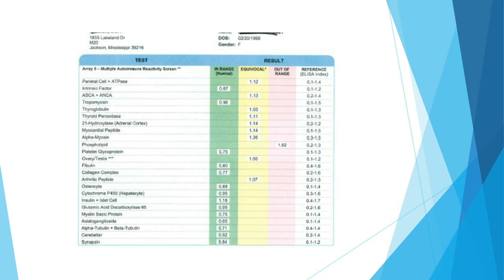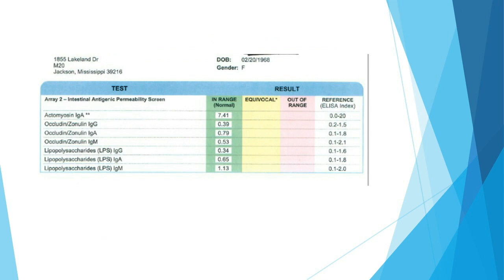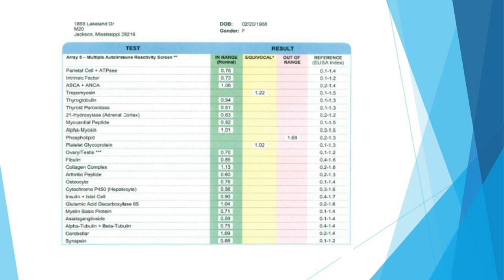Her follow-up testing that we did: we looked at that Cyrex Array 2, and it was completely clean after gut protocol, which is always a victory because we know that we've reduced her risk for developing progressive autoimmunity. And then just for ticks, we repeated that protocol. We repeated that autoimmune test for cross-reactive responses to tissues.